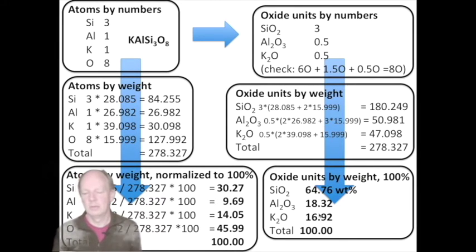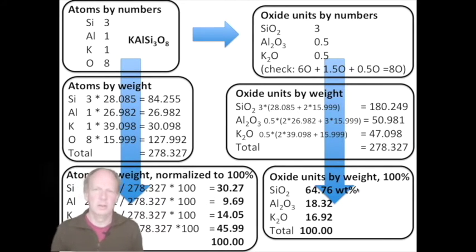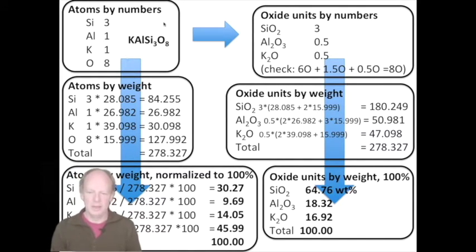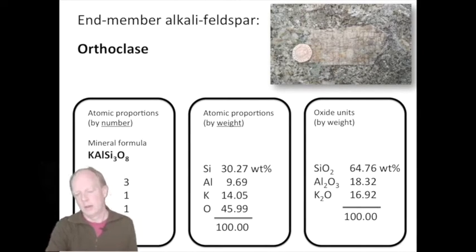In this scheme, if we start with a mineral formula, there are two routes: we can go to atoms by weight, or go to oxide units by weight. Sometimes you have oxide unit data and need to go back — I'll show that later. But here we have all three representations: atoms by number, atoms by weight normalized to 100, and oxide units by weight normalized to 100.